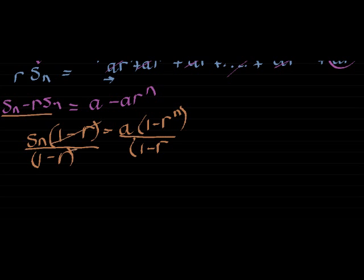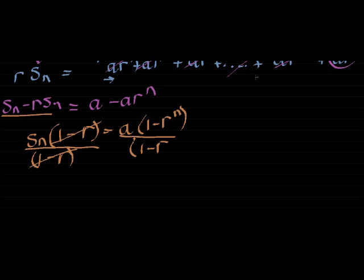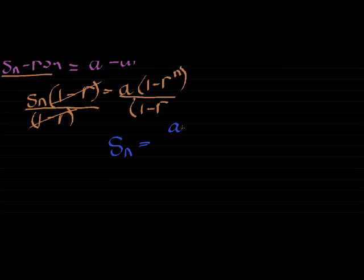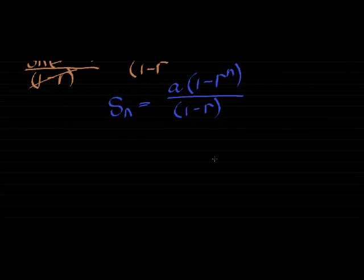And here comes my formula. A very important formula. Sn is equal to a times 1 minus r to the power of n over 1 minus r. And there we go. That is the formula.